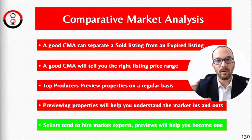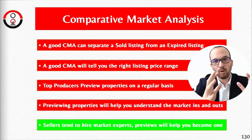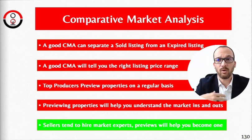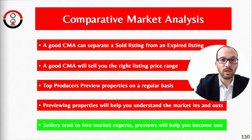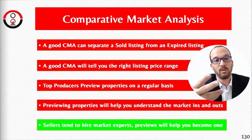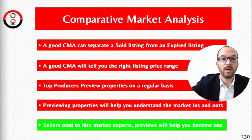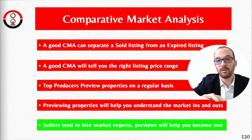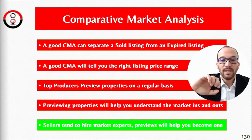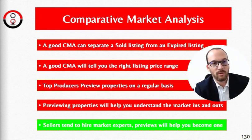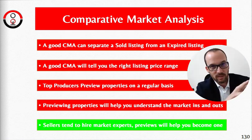When you determine price, look at sold listings. Then show the seller where their house stands compared to active homes, because buyers in a given budget will look at everything available — that's the competition. Choose three similar homes in close proximity and show how long they've been on the market: 30 days, 180 days, three years. This shows the seller who is selling and who's not.